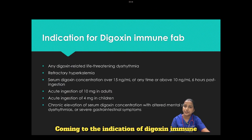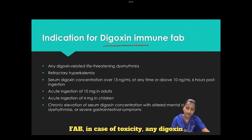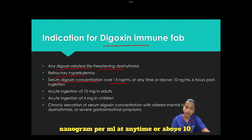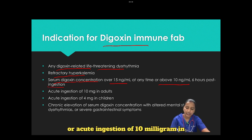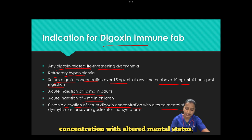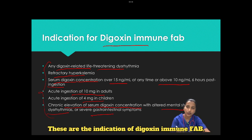Coming to the indications for digoxin immune fab in case of toxicity: any digoxin-related life-threatening dysarrhythmia, refractory hyperkalemia, serum digoxin concentration over 15 nanograms per ml at any time or above 10 nanograms per ml 6 hours post-ingestion, acute ingestion of 10 mg in adults or 4 mg in children. Chronic elevation of serum digoxin concentration with altered mental status, dysarrhythmia, and severe GI symptoms are also indications.